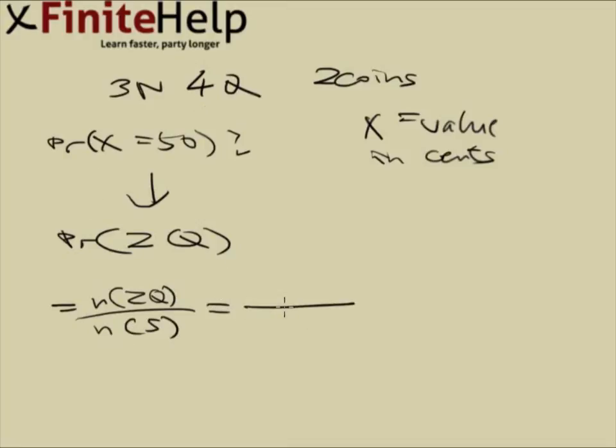Let's do the bottom first. We have seven coins. We're trying to find two. This order doesn't matter, so we're going to be using combination. So this is going to be a combination 7-2.